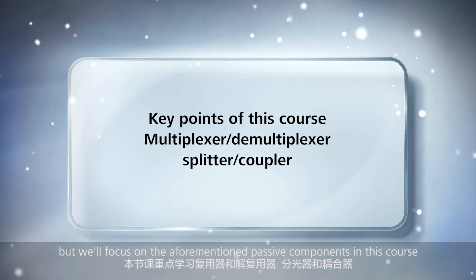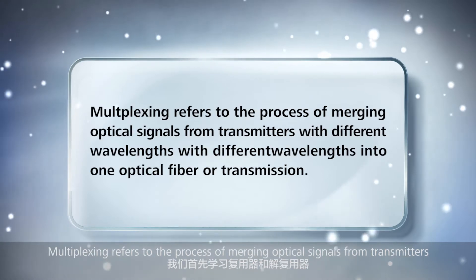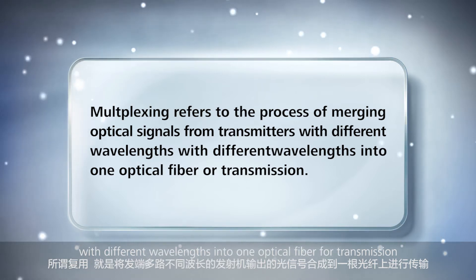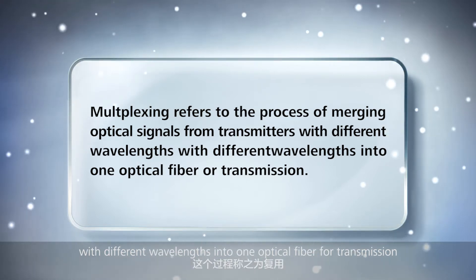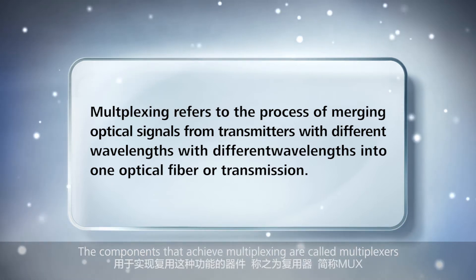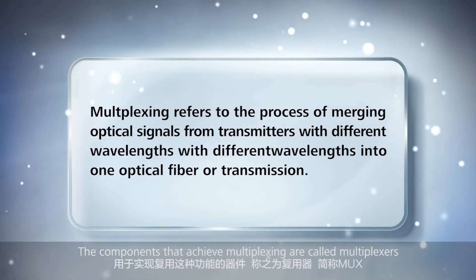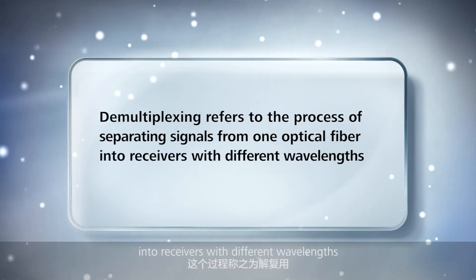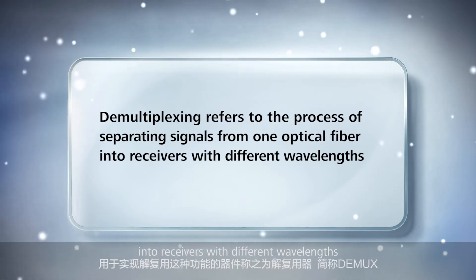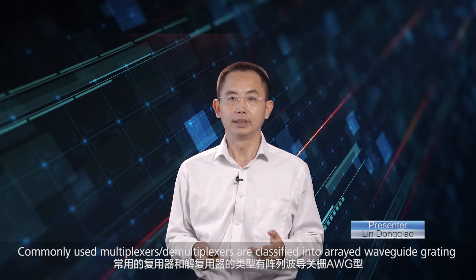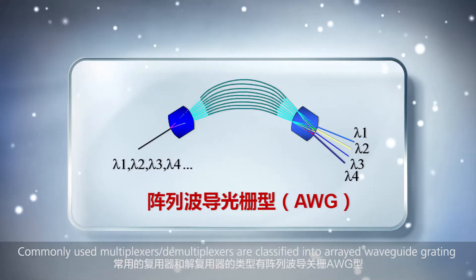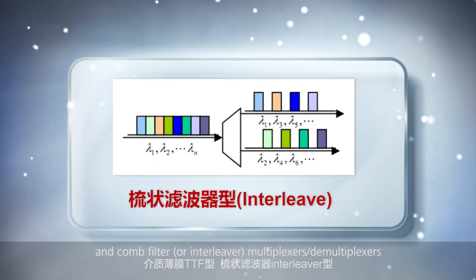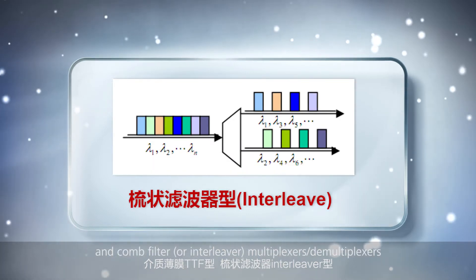WDM systems have many other types of passive components, but we'll focus on the aforementioned ones in this course. Multiplexing refers to the process of merging optical signals from transmitters with different wavelengths into one optical fiber for transmission. The components that achieve multiplexing are called multiplexers. Conversely, demultiplexers demultiplex signals from one optical fiber into receivers with different wavelengths. Commonly used multiplexers and demultiplexers are classified into arrayed waveguide grating (AWG), thin film filter (TFF), and comb filter or interleaver types.